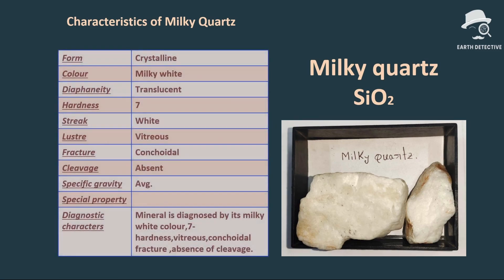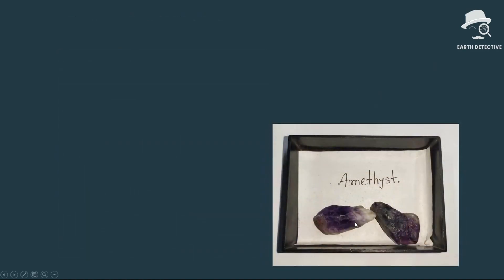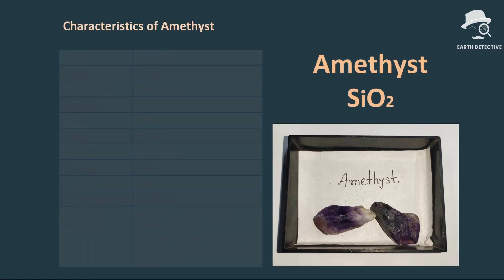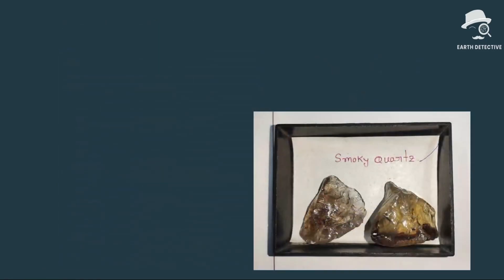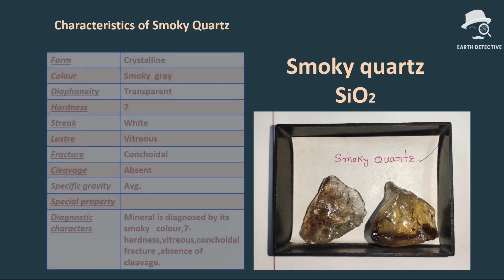Milky quartz can be identified by its milky white color, hardness of seven, vitreous luster, conchoidal fracture, and absence of cleavage. Next, a beautiful mineral — amethyst — which is violet in color. It also has hardness of seven, vitreous luster, conchoidal fracture, absence of cleavage, and the special property of striations.